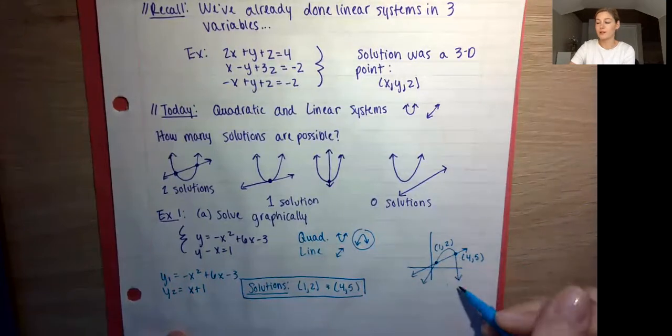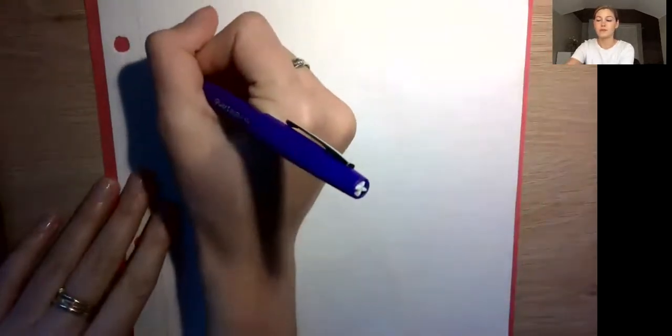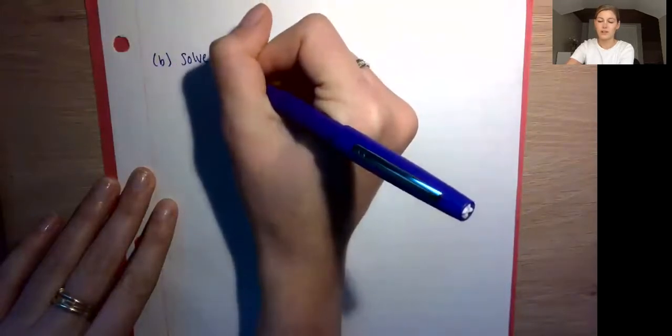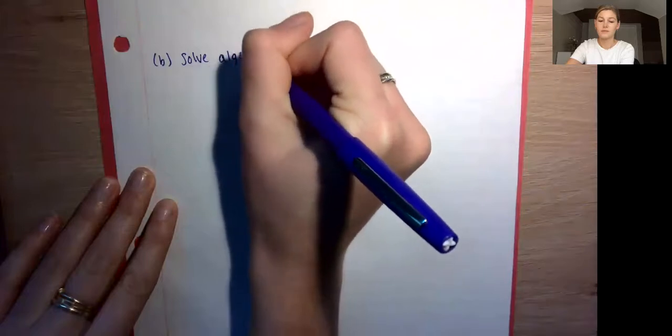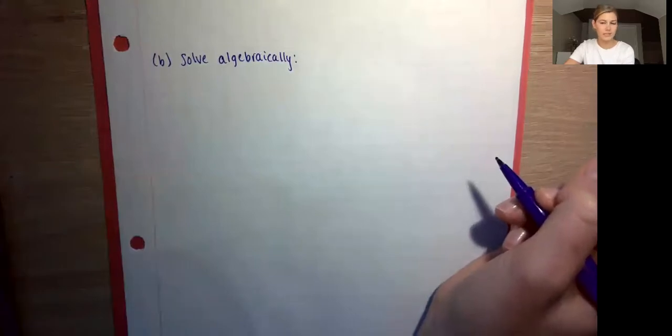So our solutions are the coordinates (1, 2) and (4, 5) — that's where our parabola and our line equations were equal at those two points. Now let's go over to Part B. Part B says solve algebraically. We're going to solve this same system and hopefully get the same answers we got graphically, going through the steps of how to do this. This is the method the Regents is typically going to ask you to use.